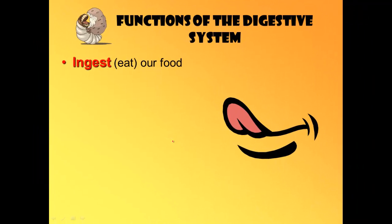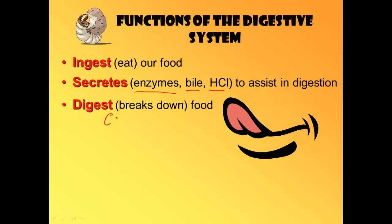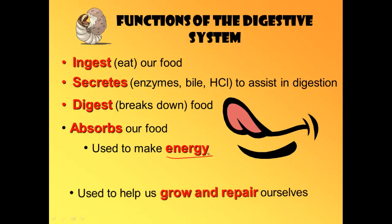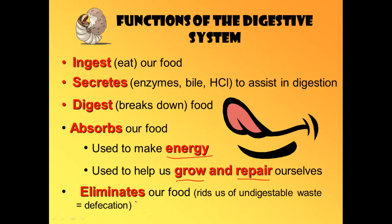So what are the functions specifically of the digestive system? There are five functions. First, we ingest or eat our food. We also do a lot of secretions — we secrete enzymes, bile, and hydrochloric acid, and then we use those to help digest or break down our food. Breaking the bonds between larger molecules to create smaller molecules or monomers is called catabolism, also called hydrolysis. We catabolize our food, then absorb it and use it to make energy, grow, and repair our bodies. And the last job is to eliminate all the food we can't digest and defecate it.